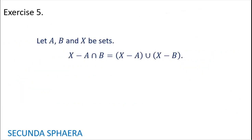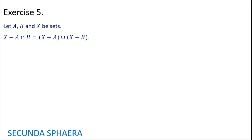A little refreshing that we finished exercise 4. Now we go for exercise number 5, the last of this video. Let A, B, and X be sets. X without (A intersection B) is going to be equal to (X without A) union (X without B). And right now I continue with the proof. The proof is for an equality of sets, so again it is going to be by equivalences.